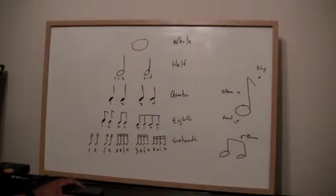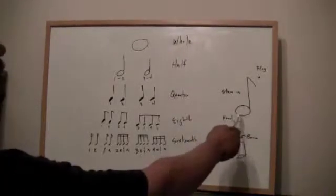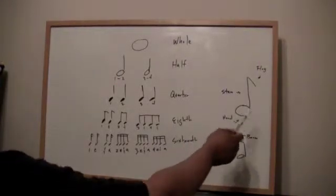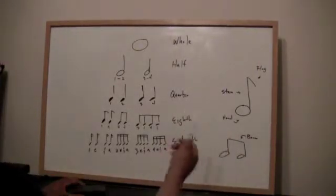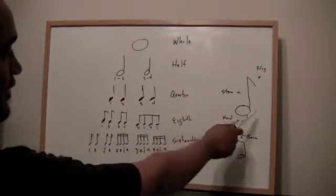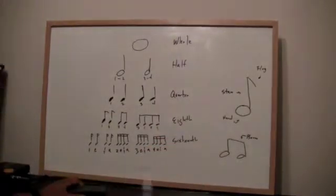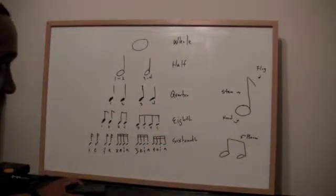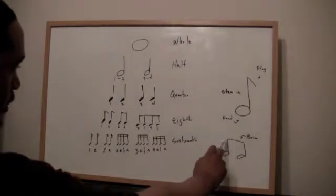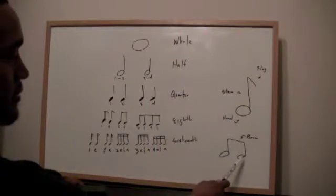Now before we jump right into the rhythm tree, let's just talk about the different parts of the notes. First, here you can see we have the note head, which is just the circle. Sometimes it can be a different shape, sometimes it'll be a circle and it's actually filled in — it just depends on the type of note or the type of instrument we're writing for. Then you can have the vertical line, which is called the stem, and then you can have a flag hanging off there. If you have two notes back-to-back that would normally have flags, you can connect them with beams — essentially two notes with flags that are back-to-back.